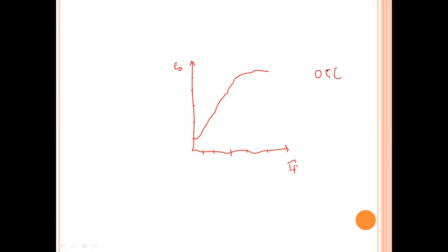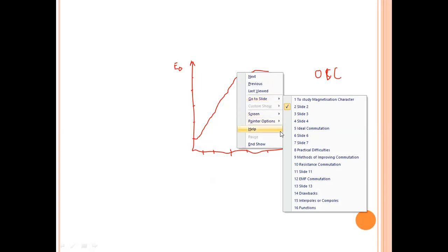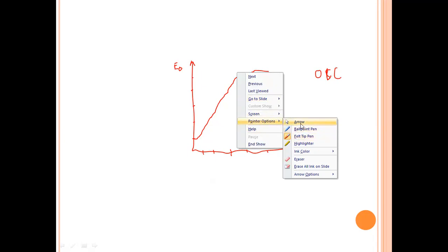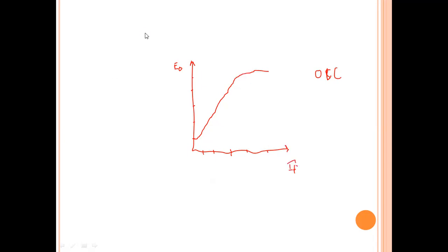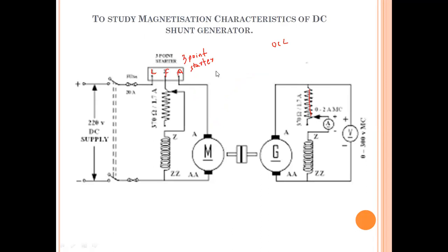That was the theoretical part. Now we will learn how to practically obtain this curve using virtual labs. Remember the connection: positive is connected to L, F is connected to the rheostat and through the field winding, and A is connected to the armature. The generator's armature is connected to the field winding through an ammeter and a voltmeter. We will now switch to the virtual lab.